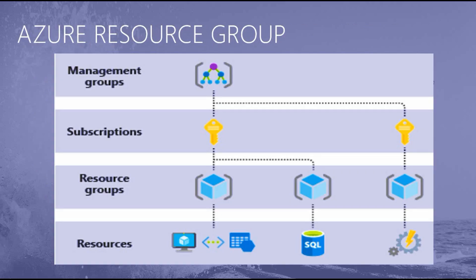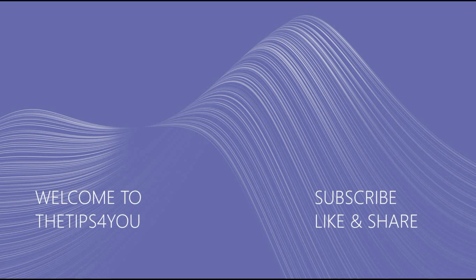Looking at the structural picture, you have different layers. The resource group is one layer, and below it you can create resources. On top of it you have subscriptions — whether a free tier, pay as you go, or Office 365. On top of subscriptions you can also have management groups. So the overall structure is: management group, then subscription, then resource group, and below that your resources like VMs, SQL databases, or any other resources.